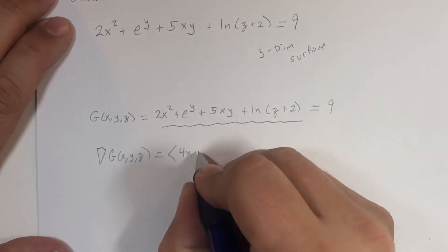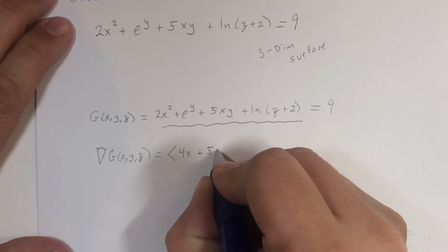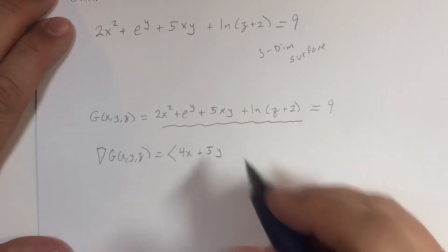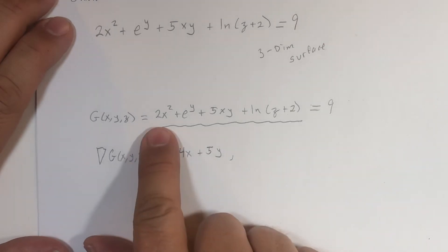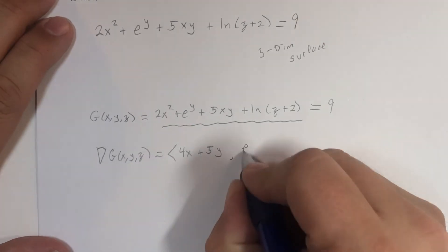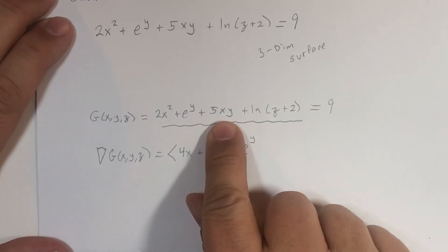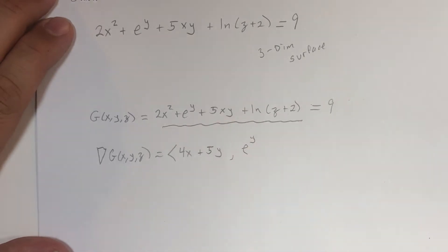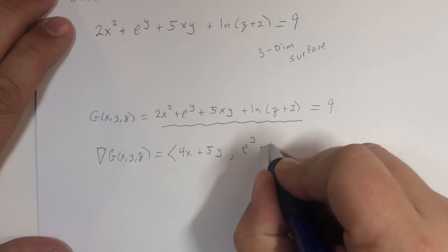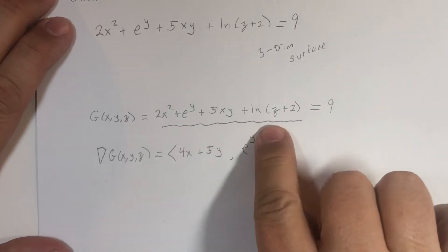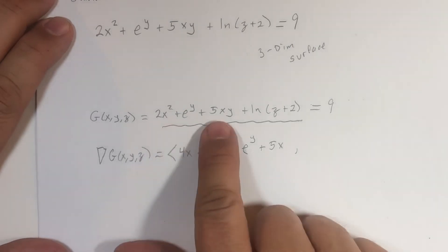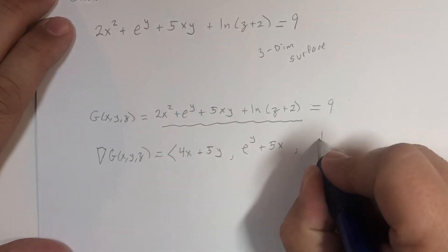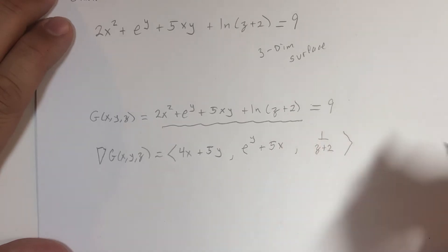The y partial derivative would be zero plus e^y, plus 5x, plus another term of zero. Finally, the z partial derivative would be zero, zero, zero, and then 1/(z+2).